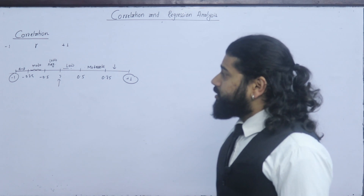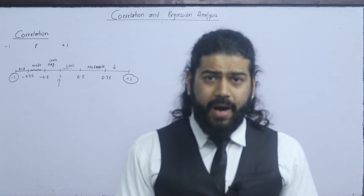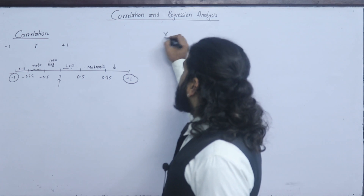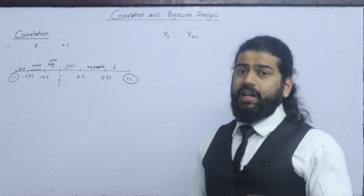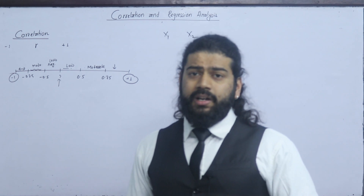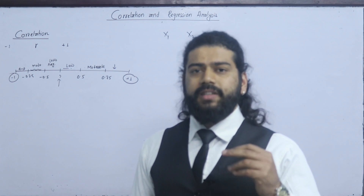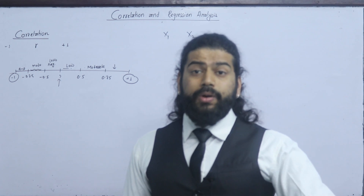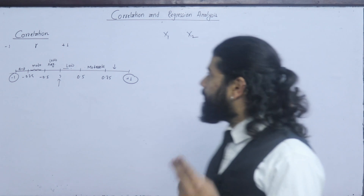Now, what are the two questions? Simple, partial, or multiple. Simple correlation: for example, the relationship between price and demand, or the relationship between exercise and body weight — these are examples of simple correlation between two variables.